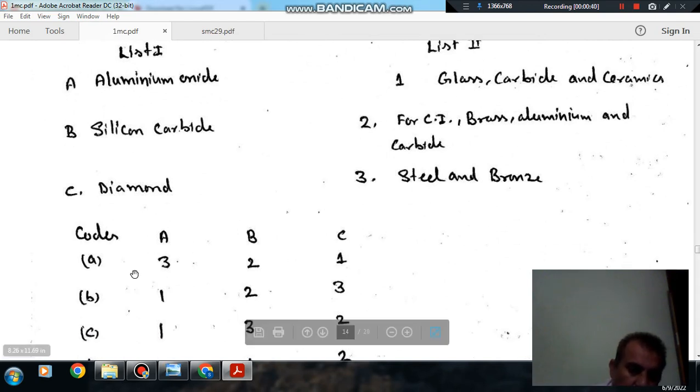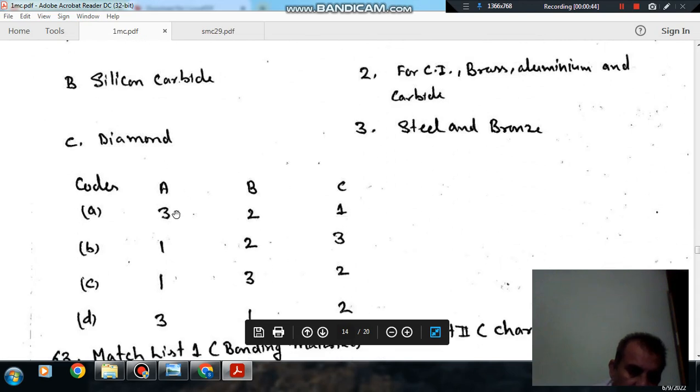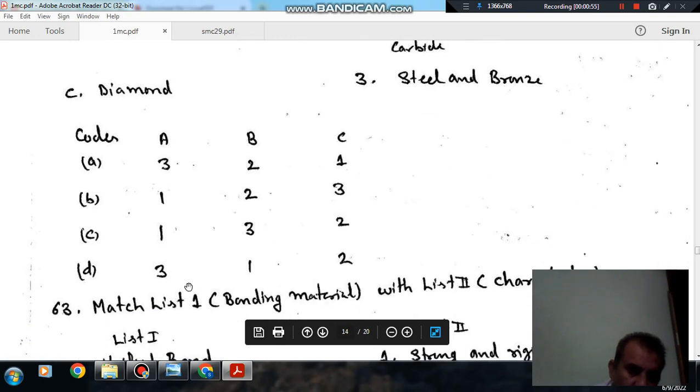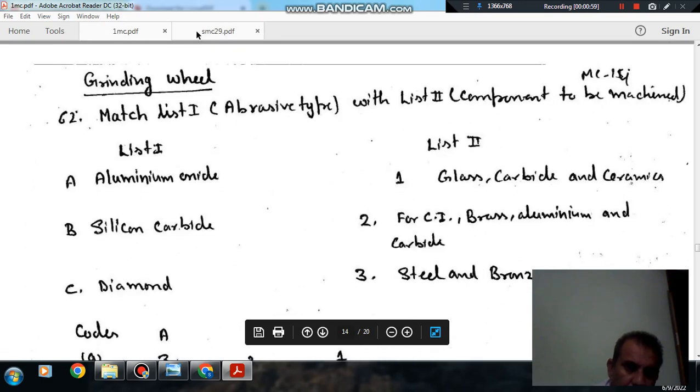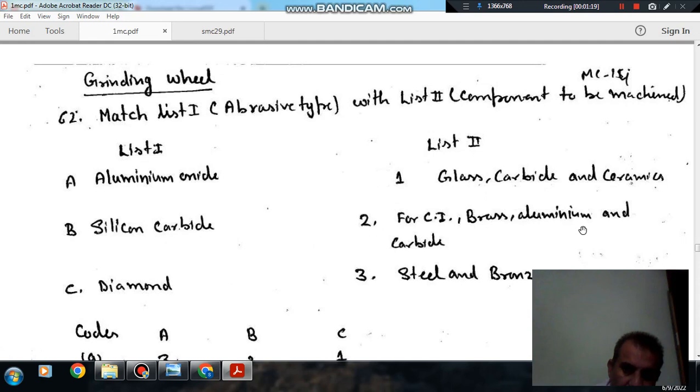Option A: 3, 2, 1. Option B: A 1, B 2, C 3. Option C: A 1, B 3, C 2. Option D: A 3, B 1, C 2. So here, aluminum oxide is used for cutting steel and bronze. And diamond is the hardest option known, so that is used for cutting glass, carbide and ceramic. And silicon carbide is used for cutting cast iron, brass, aluminum and carbide.